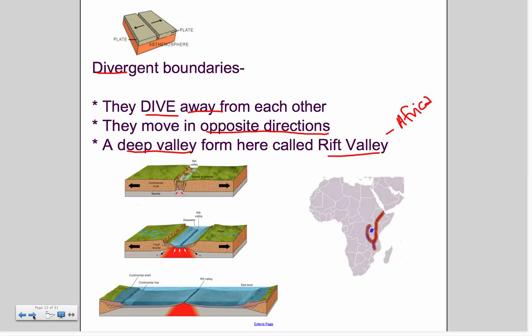Divergent boundaries we're going to move in. This is where they dive away from each other. They move in opposite directions. These tend to cause very deep valleys. One specifically is the Rift Valley of Africa. Here's the African continent. And this is actually the divergent boundary. This horn of Africa here is actually moving away from the continent.